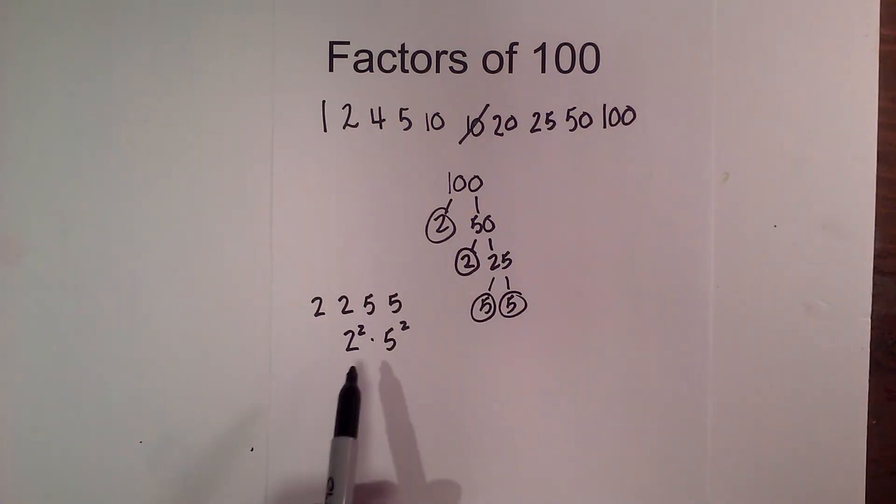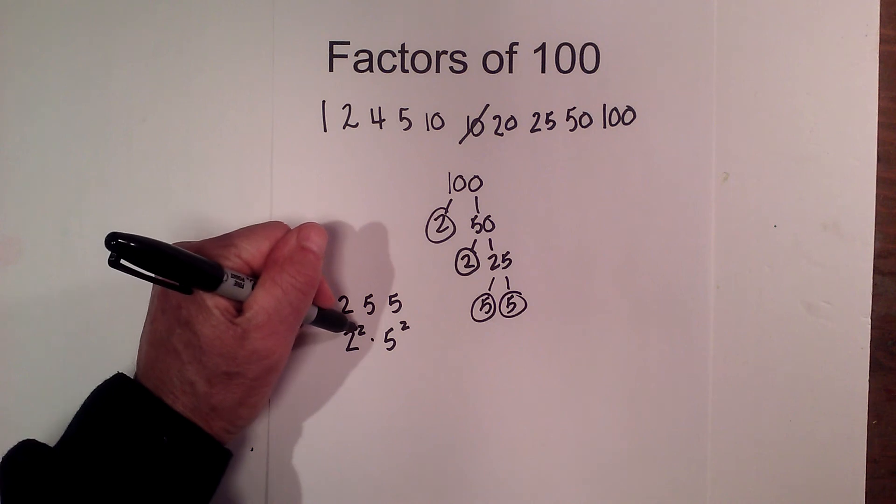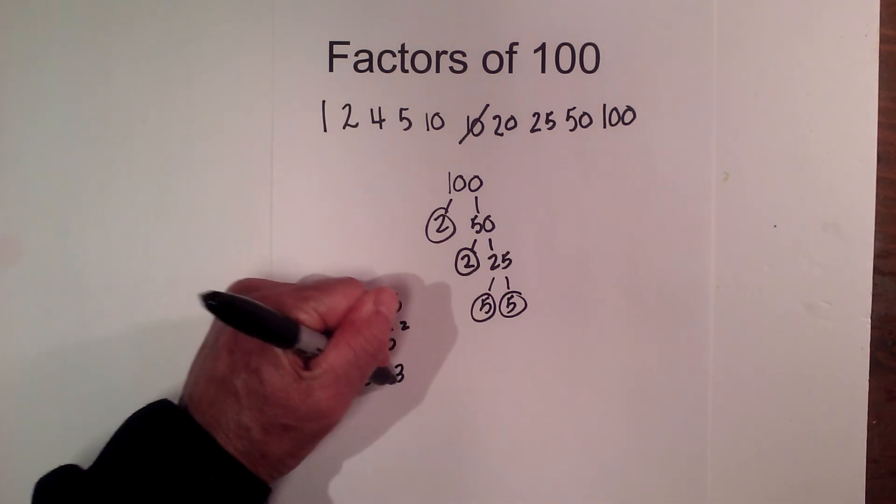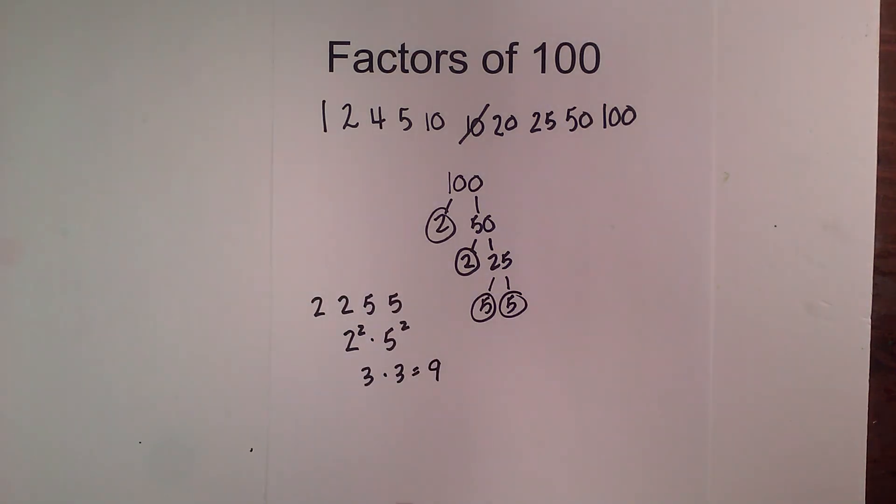Now here's the trick. You add 1 to each exponent, so 2 plus 1 is 3 and 2 plus 1 is 3, and multiply these together. 3 times 3 is 9, and that tells you how many factors you should have.